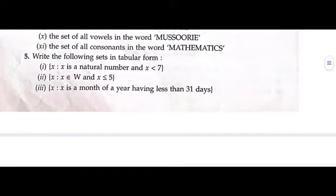Write the following sets in tabular form. Tabular form means we will have to write all the contents of these sets. Let's start. For writing any set, we use a curly bracket.